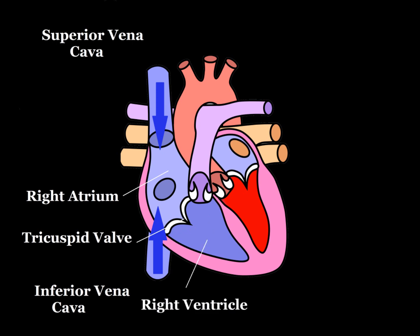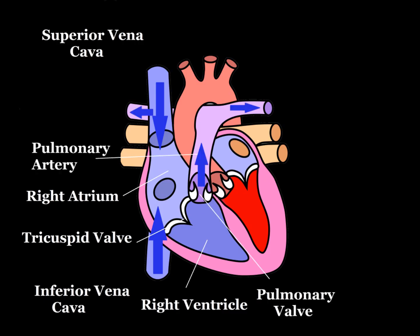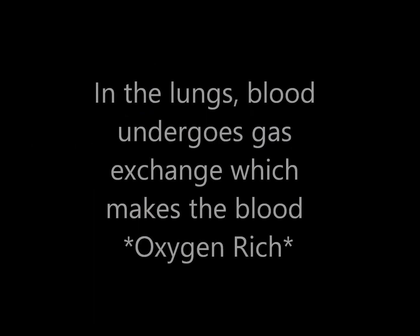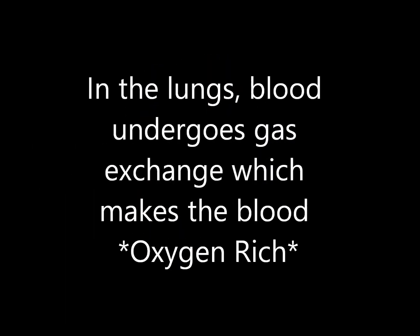Once the right ventricle is filled with blood, the tricuspid valve is forced closed and the right ventricle contracts. Blood is pushed through the pulmonary valve and into the pulmonary artery, which goes to the lungs. In the lungs the blood undergoes gas exchange and becomes oxygen rich.